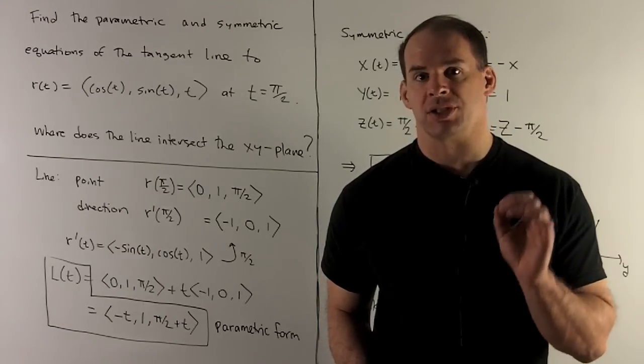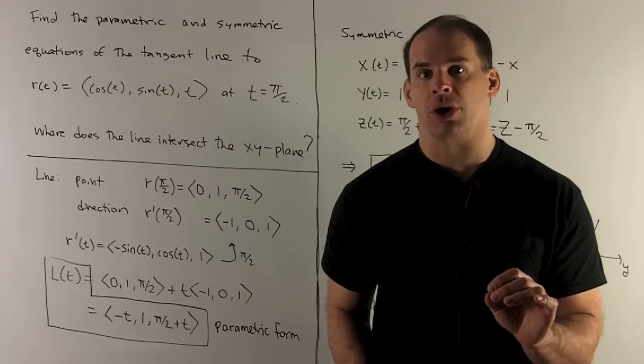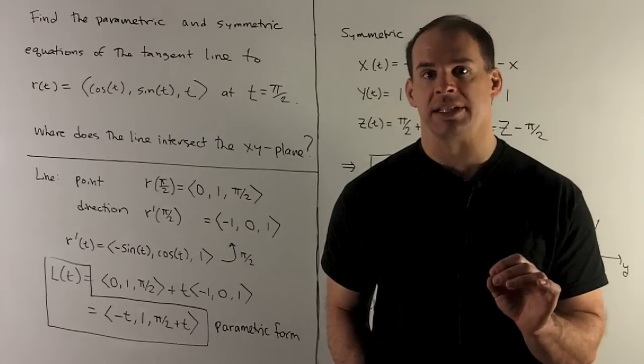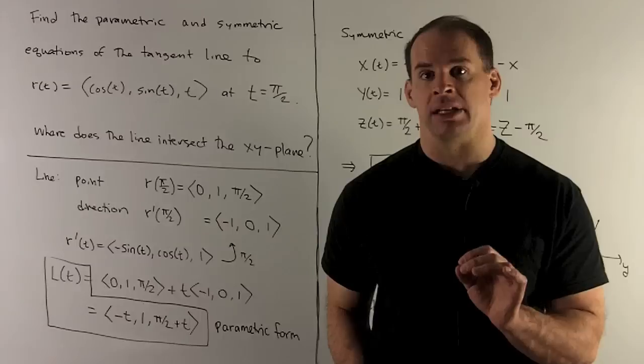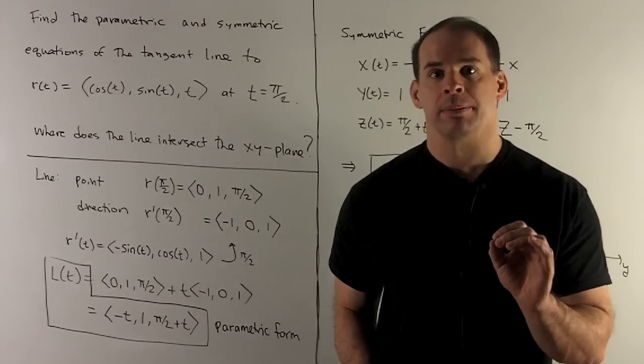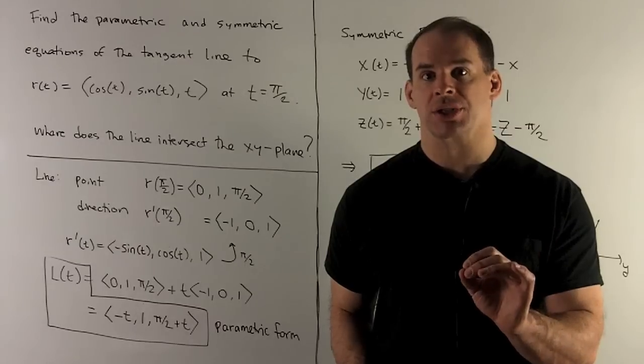Find the parametric and symmetric equations of the tangent line to the parametrized curve r(t) = (cos(t), sin(t), t) at t = π/2. Once you have the line, find the point in the xy-plane where it intersects.